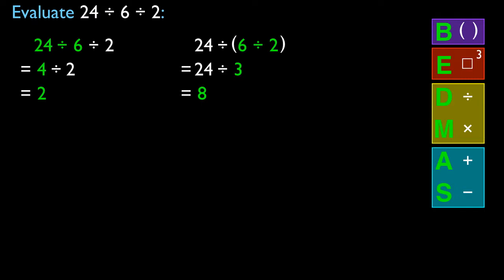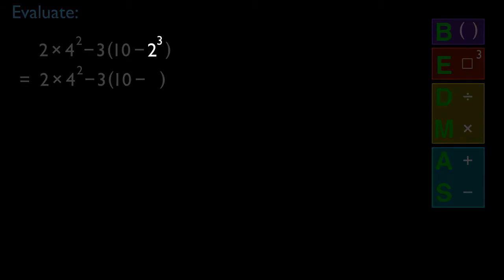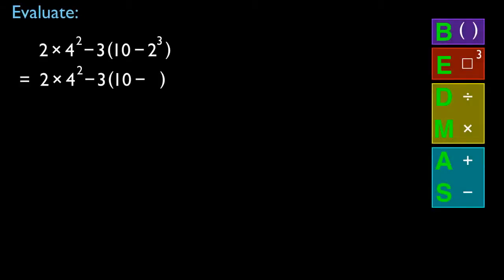Let's try one more — a fairly complex one. We evaluate 2 times 4 squared, subtract 3 times (10 subtract 2 cubed). We have brackets, so that's where we begin. Inside the brackets, there's a subtraction and an exponent — the exponent must be performed first. 2 cubed is 2 times 2 times 2, which is 8. So the bracket reduces to 10 subtract 8. I still need to perform that subtraction inside the brackets, so 10 subtract 8 is 2.